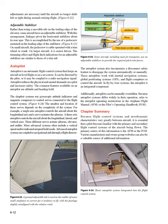Chapter Summary: Because flight control systems and aerodynamic characteristics vary greatly between aircraft, it is essential that a pilot become familiar with the primary and secondary flight control systems of the aircraft being flown. The primary source of this information is the AFM or the POH. Various manufacturer and owner group websites can also be a valuable source of additional information.